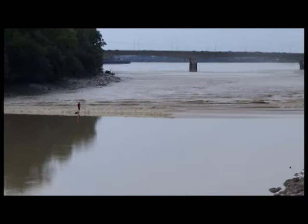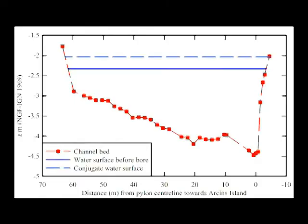The following movie shows the tidal bore of the Garonne river at La Tren, France, in 2015. The camera is looking downstream and the bore is propagating upstream. The survey of the channel cross-section showed an irregular cross-sectional shape.